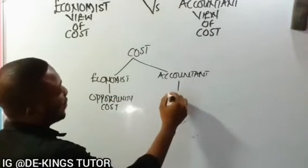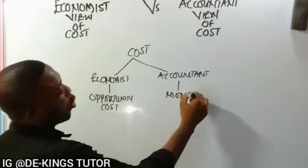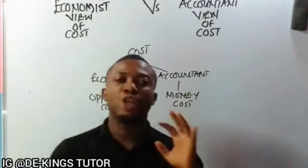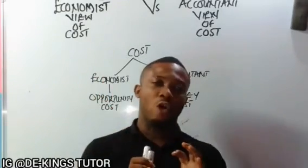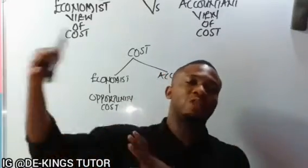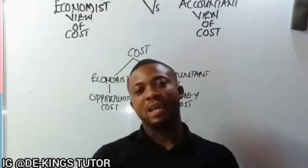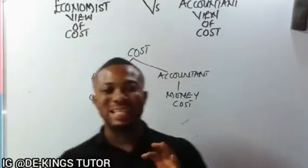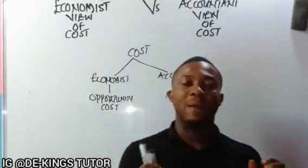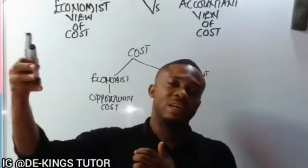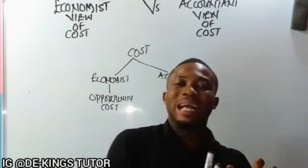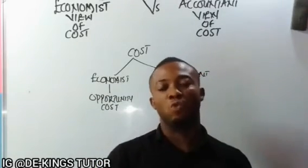What is opportunity cost? Opportunity cost is the alternative foregone — the cost of satisfying one want at the expense of another. The money cost, on the other hand, is the actual expenses you have incurred. The accountant is not concerned about what costs you left unsatisfied; they are concerned with what are the actual expenses you make.